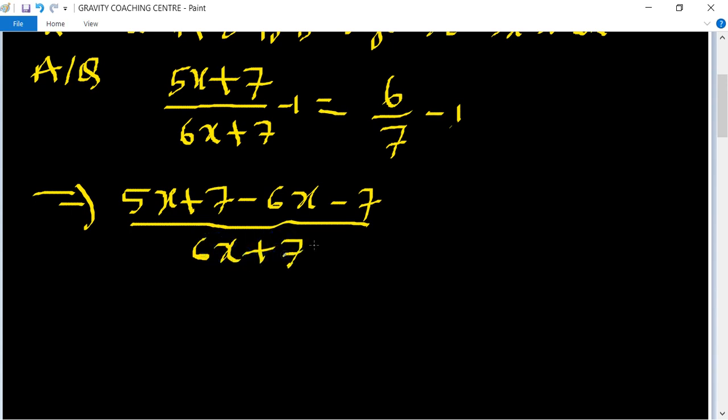And this implies that 7 minus 7 cancel, so minus x upon 6x plus 7 equals minus 1 upon 7. Minus minus cancel.